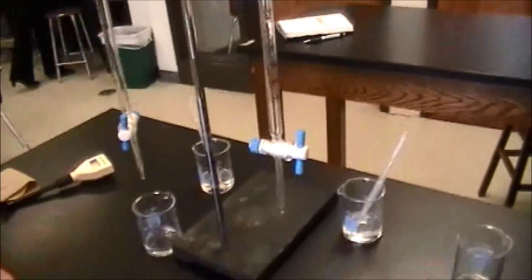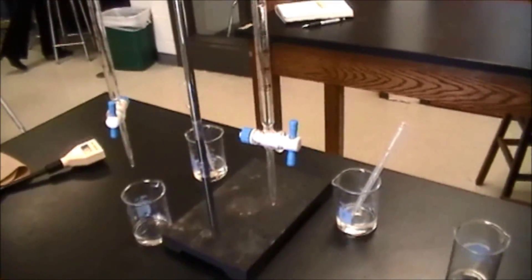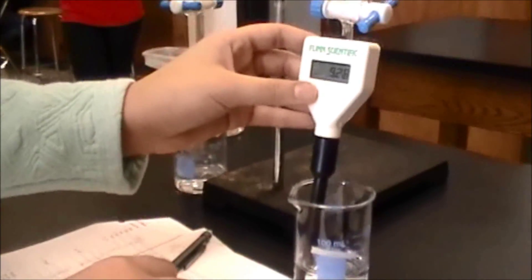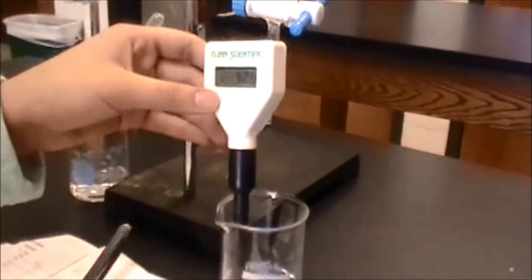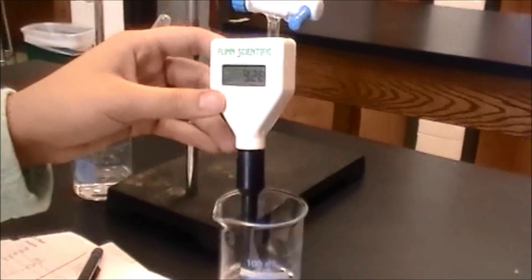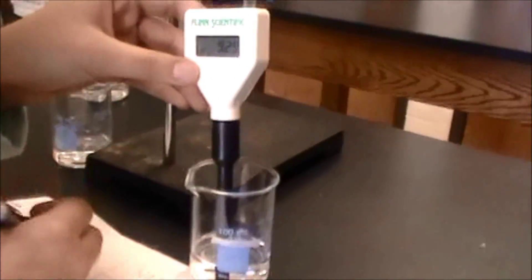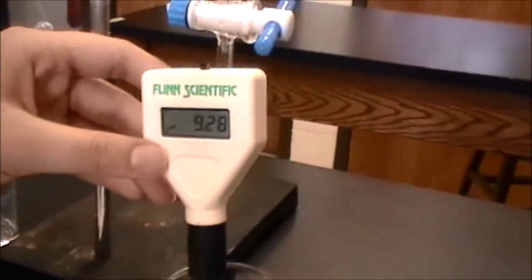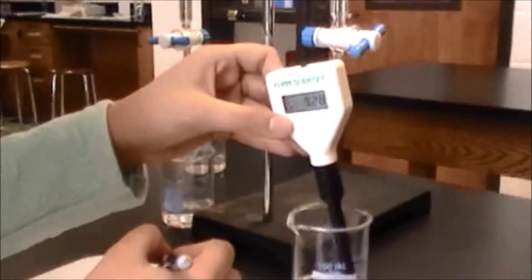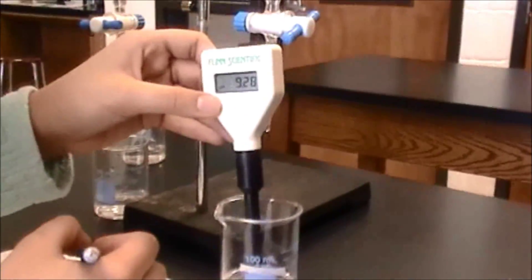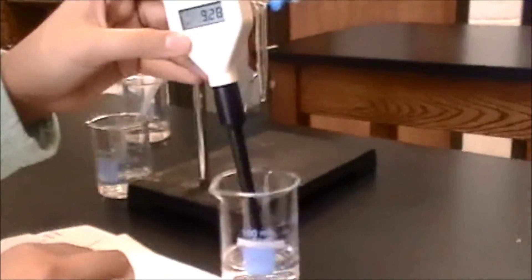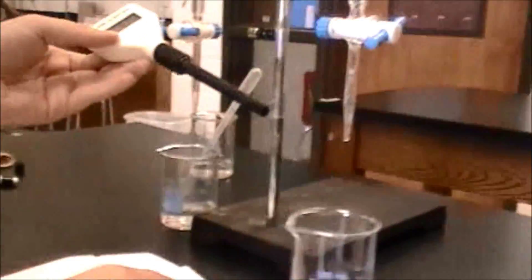Cool. Here's Rana taking pH of the solution after the second drop has been put in. So it's reading 9.28, and we're wanting it to read around 9.2, so that's pretty good. Or we want to keep it around 9.2. So we're going to keep adding milliliters and see how the pH goes.